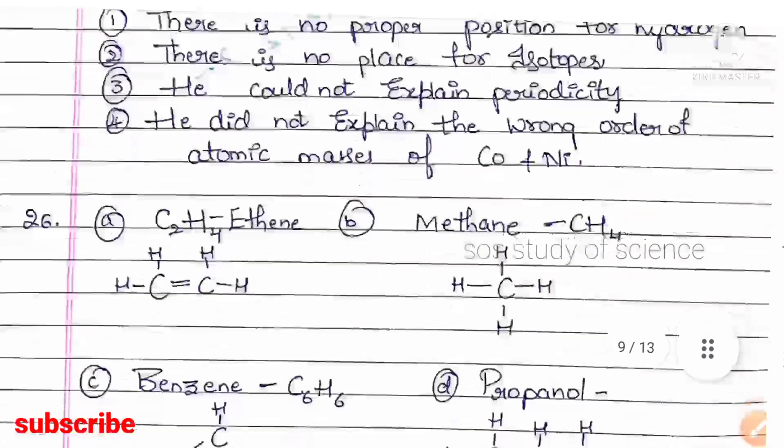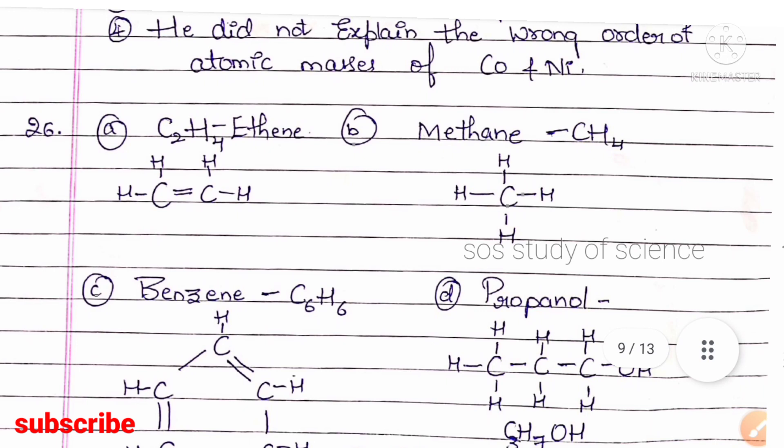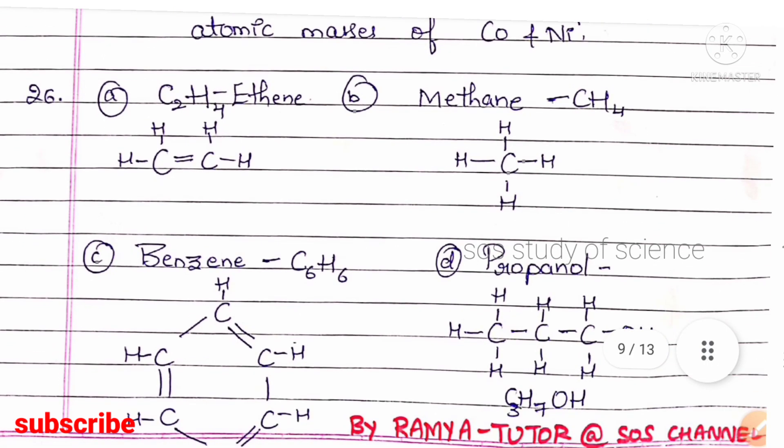Question 26 asks for the structural and molecular formula of ethane, methane, benzene, and propanol. Ethane is C₂H₄, methane is CH₄, benzene is C₆H₆, and propanol is C₃H₇OH. This is all about the Chemistry section.